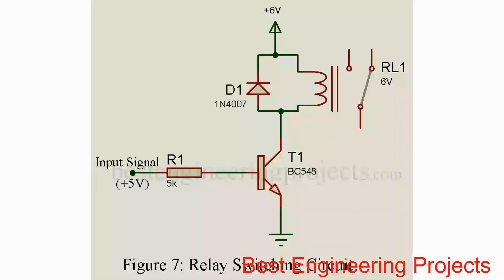Looking at the circuit: a current-limiting resistor of about 5 kilohms is connected between the Arduino voltage output and the base of the transistor. The emitter is grounded, and from the collector, one end of the relay coil is connected, while the other coil end is connected to the supply voltage (VCC). This supply voltage must equal the rated coil voltage.